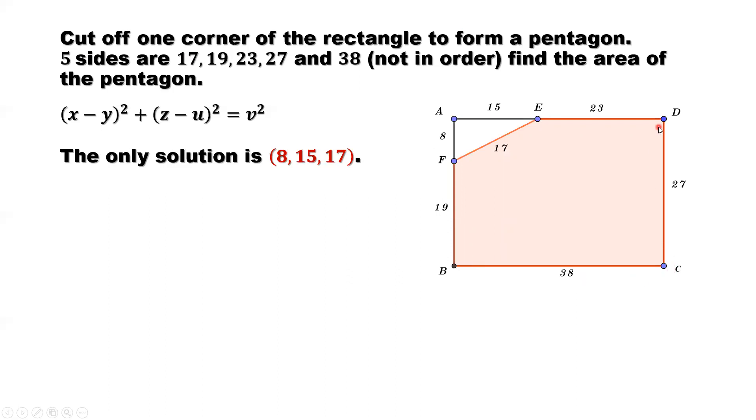Now here's a 17. Because one side must be 8, this 8 only can be formed by 27 minus 19. This is the only combination. And 15 is the only combination, the difference of 38 minus 23. So we figured out all the information we need.